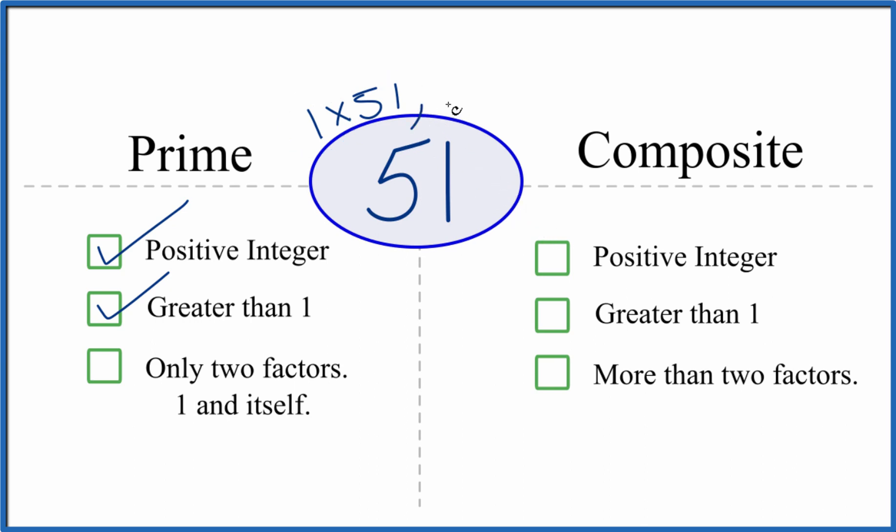It turns out that 3 times 17, that equals 51. So there are more than two factors. So 51, it's not a prime number.